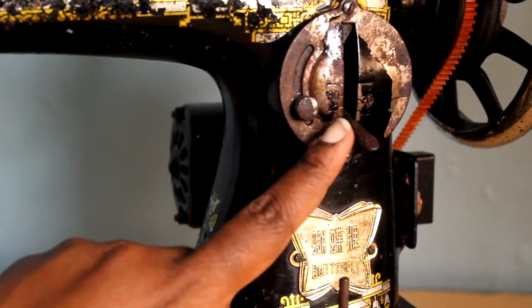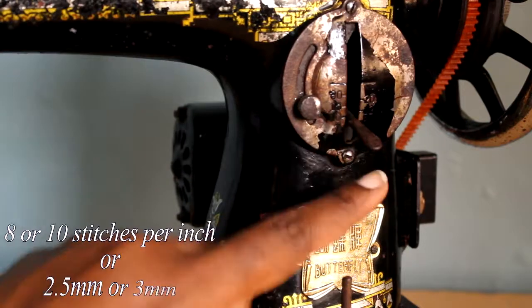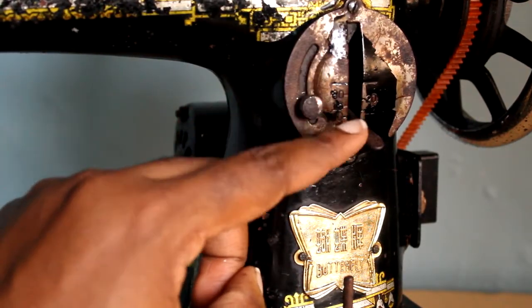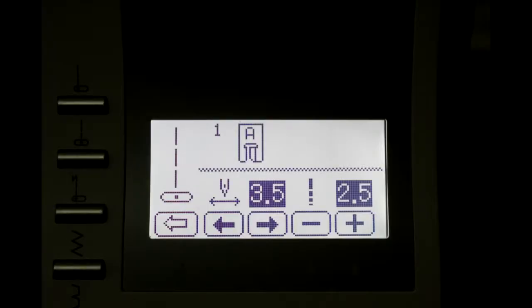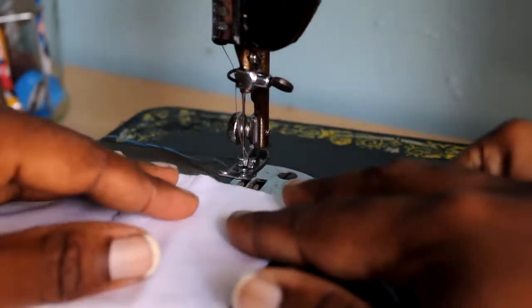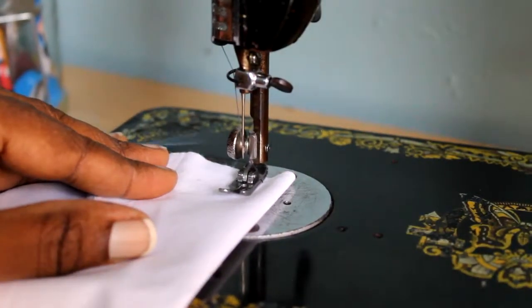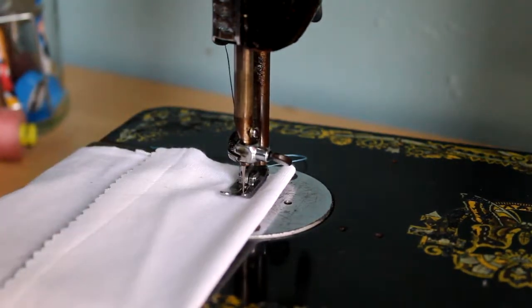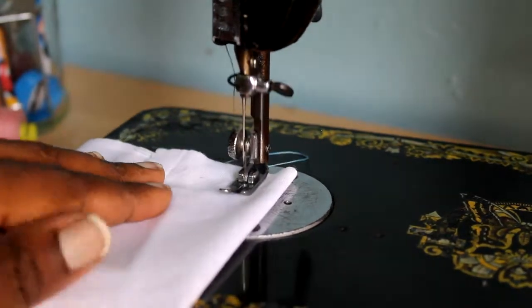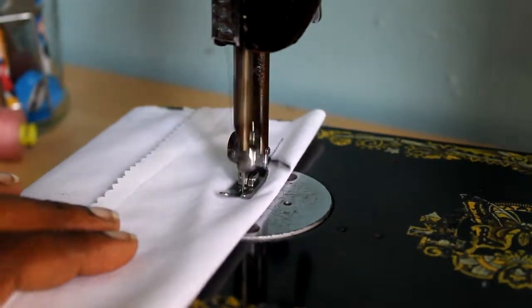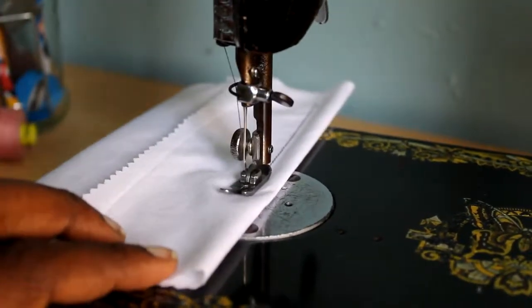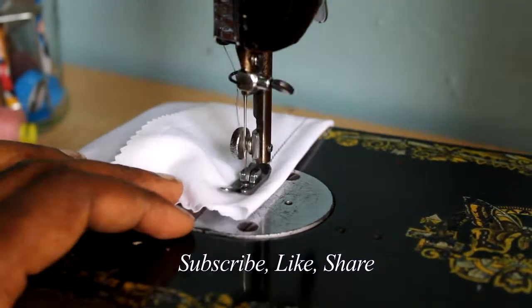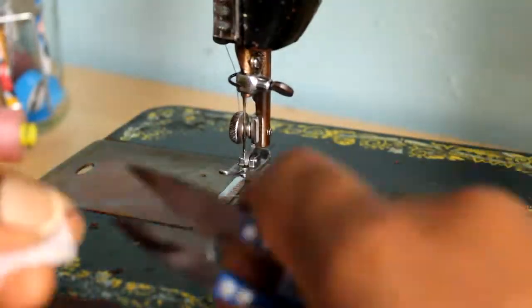The first thing is that your stitch length should be set to the default. On this machine that would be an 8 or 10. If you have a machine like this it should be 2.5, or if it's digital like this it should also be 2.5 if you're in millimeters. Before you actually adjust anything, you should just do a test swatch. I'm going to quickly sew a straight stitch here.